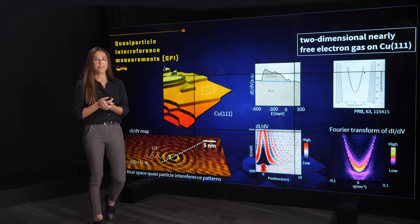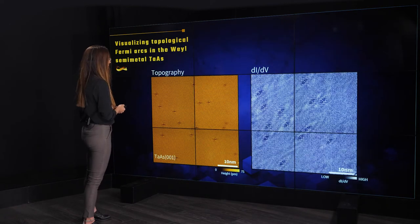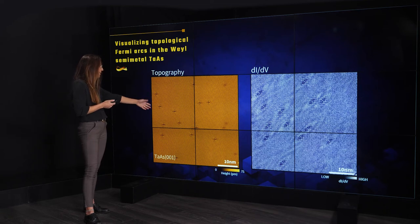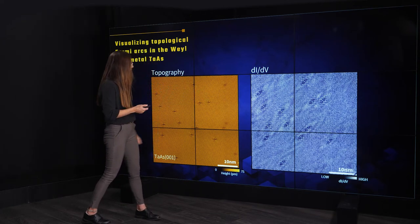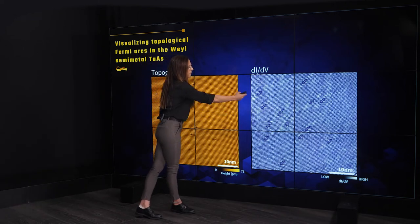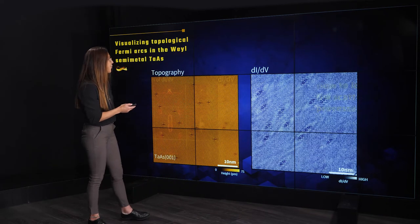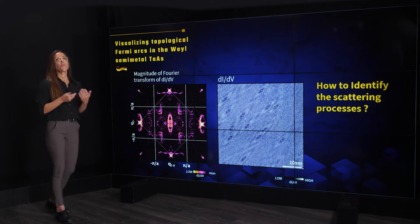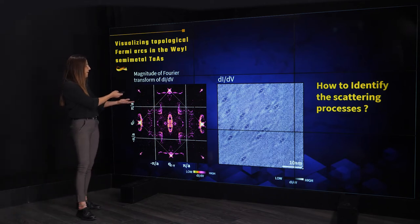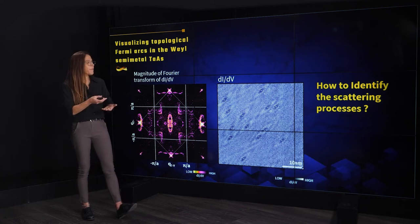Now let's see how we use these quasi-particle interference measurements to study the topological surface states called Fermi arcs on the surface of the Weyl semi-metal tantalum arsenide. Here again we see the topography of tantalum arsenide — the arsenic termination — and here is the dI/dV taken on the same region, showing real-space quasi-particle interference patterns around arsenic vacancies. When we take the Fourier transform we see beautiful quasi-particle interference patterns in momentum space, and now we would like to relate this momentum-space QPI to different scattering processes and to different states in the material's surface band structure.